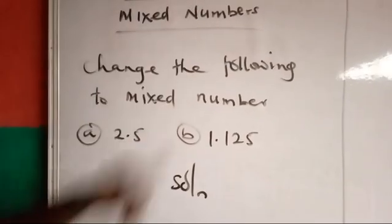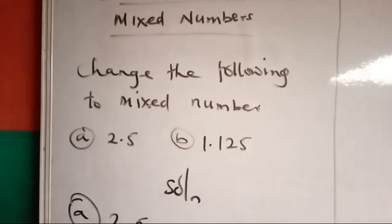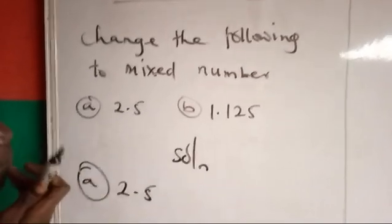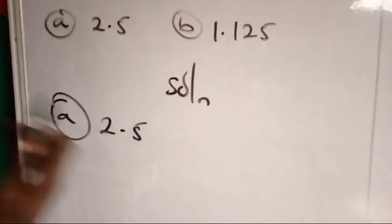From what we have here, we should put it to a mixed number. Let me look at the first one there, we have 2.5. Now to put it to a mixed number, first put it to improper fraction.